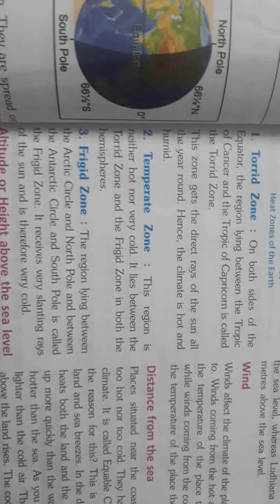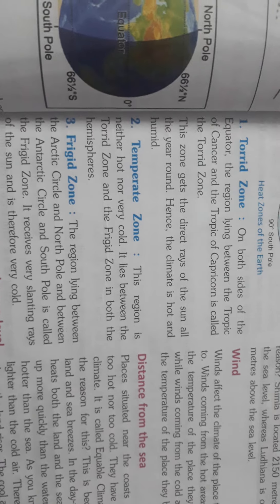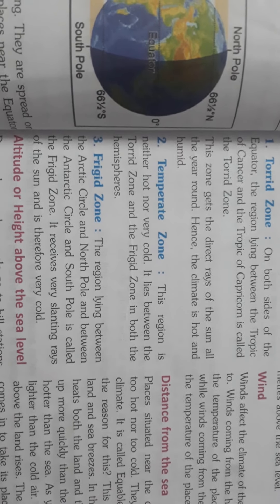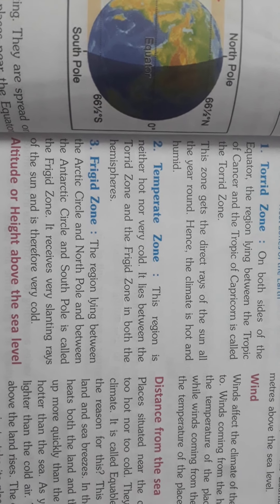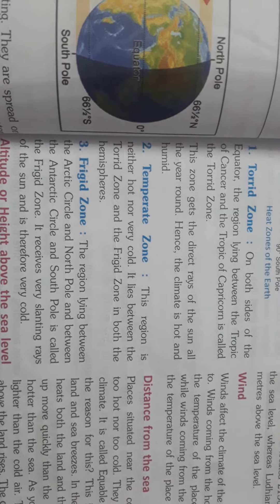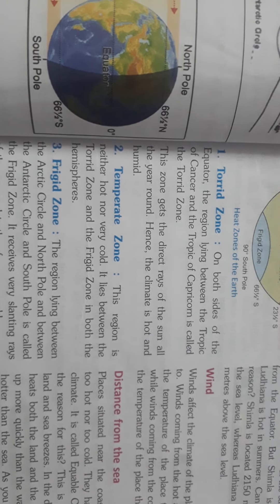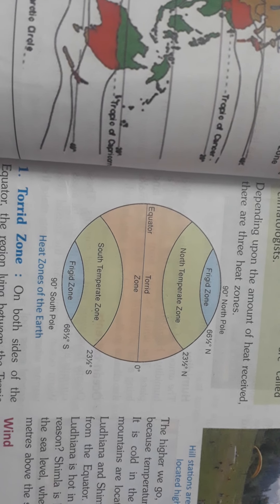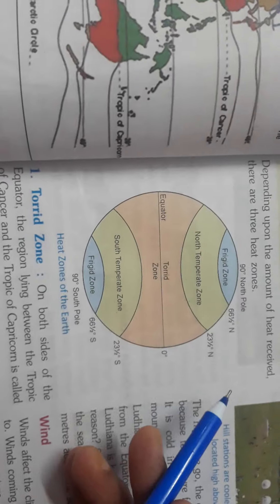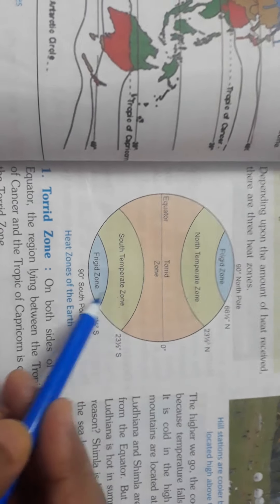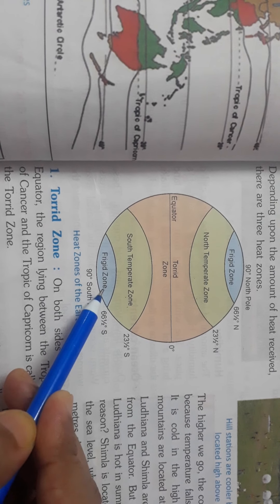The third one is the frigid zone. The word frigid means very cold. This is one of the coldest zones of the earth's surface because the rays of the sun fall at a great slant. As you can see here, the rays of the sun fall at a great slant on the frigid zone. There are two frigid zones — the northern frigid zone and the southern frigid zone.